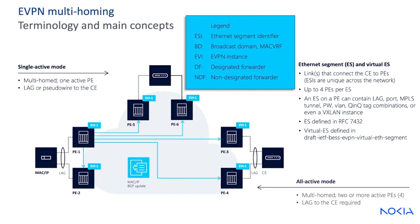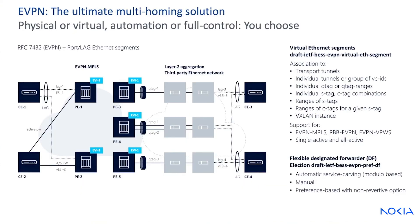Single active mode is multi-homed, but you have one active PE at a time. A LAG or pseudowire to the CE is required. In all-active multi-homing, you can have two or more PEs — up to four — and a LAG to the CE is required. In EVPN, we really do have the ultimate multi-homing solution, whether it be physical links or virtual, automated or full manual control — you can choose.